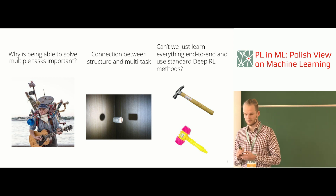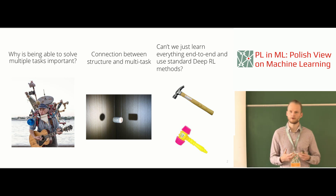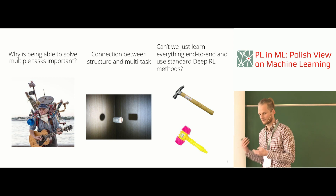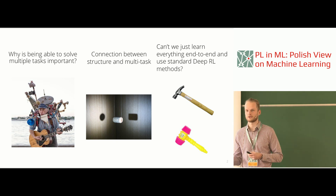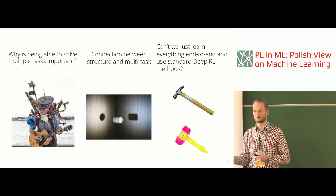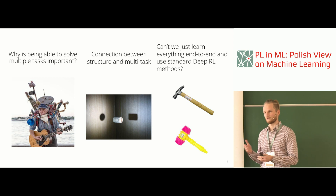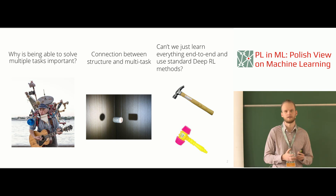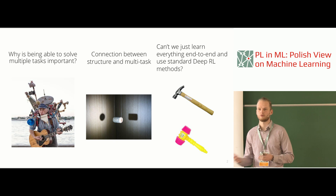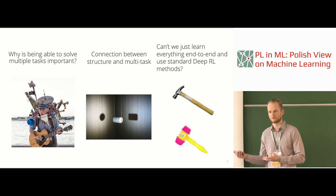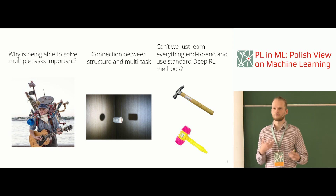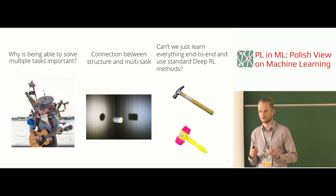Solving multiple tasks is very important from the perspective of doing something useful. The reason why we as humans are so impressive in terms of learning new skills is not because we can master one particular skill really well, but because we can learn many different skills and adapt to new skills very quickly. This stays in stark contrast to model-free reinforcement learning methods that focus on one particular task.